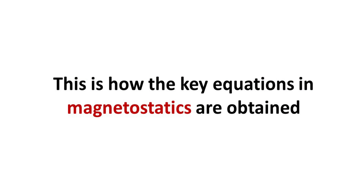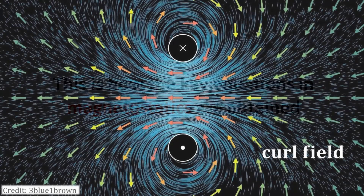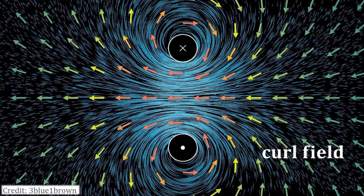Part 4: This is how the key equations in magnetostatics are obtained. As we will learn in this chapter, static magnetic fields are curl fields, and current flow is the source of this rotational motion.